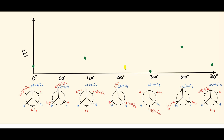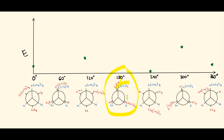The eclipsed conformer at 180 degrees has one steric interaction: a methyl group eclipsing the blue tert-butyl group. Having two larger groups close together is unfavorable due to electron cloud repulsion — bigger groups have greater electron cloud densities and repel each other more. So we plot it higher than the 300-degree eclipsed conformer.